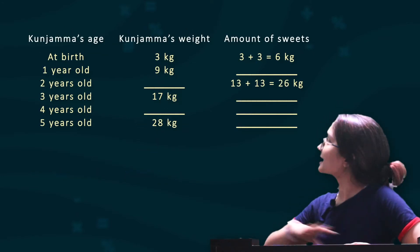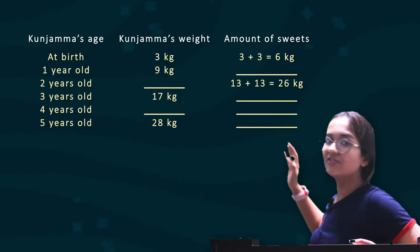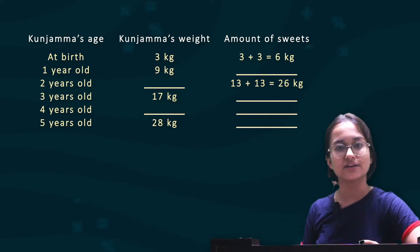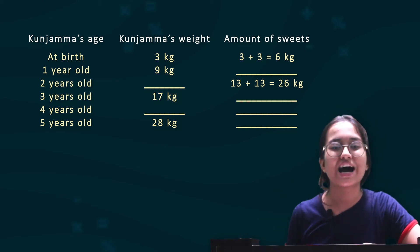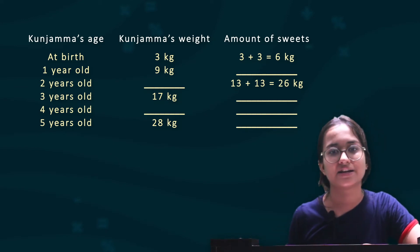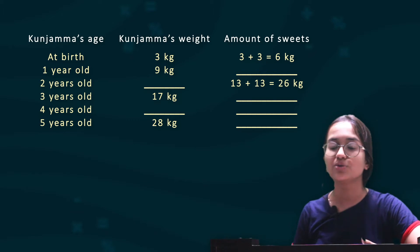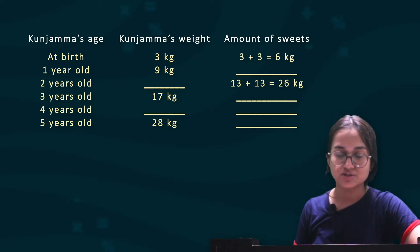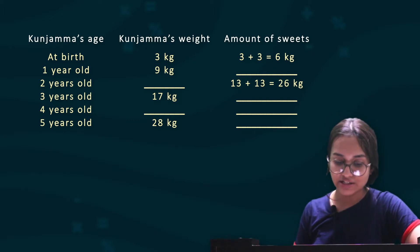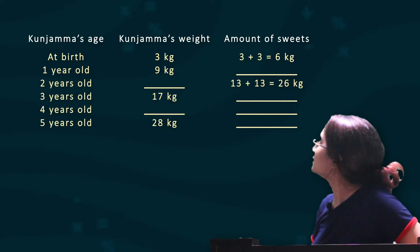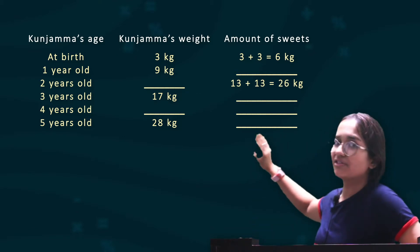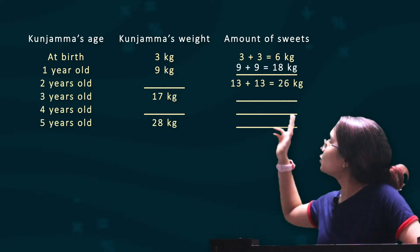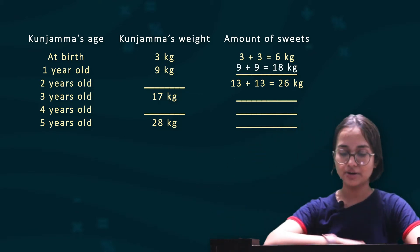We are given Kunjama's different weights in different years and need to calculate how many kgs her parents distributed that particular year. For example, when she was 1 year old and weighed 9 kgs, they would have distributed 18 kgs of sweets. Similarly, you need to complete the rest of the table.